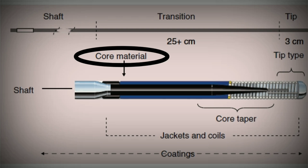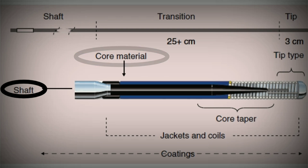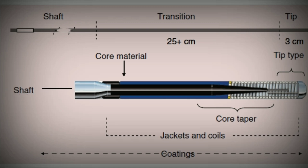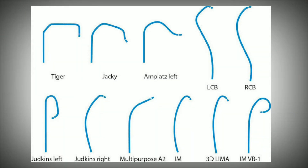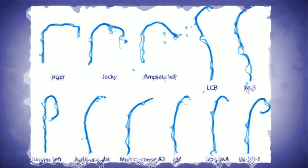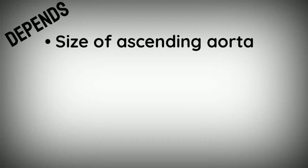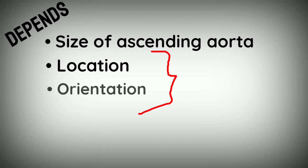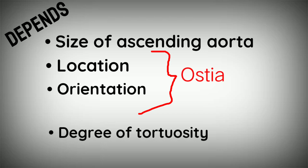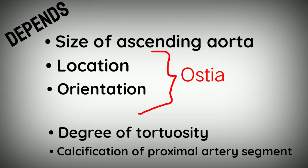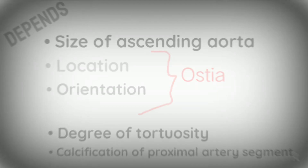The majority of guide wires are made of stainless steel and coated with polytetrafluoroethylene or Teflon. The inner core has a mandrel while the shaft is a coiled wire, also called a safety ribbon, and extends the whole length of the coil. All wires have a bead at the tip which is soldered. Commonly used guides are Judkins, Amplatz, and extra backup guides, and selection depends on the size of the ascending aorta, location and orientation of the ostia to be cannulated, and degree of tortuosity and calcification of the coronary artery segment proximal to the target area.